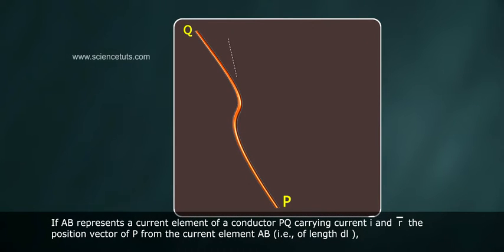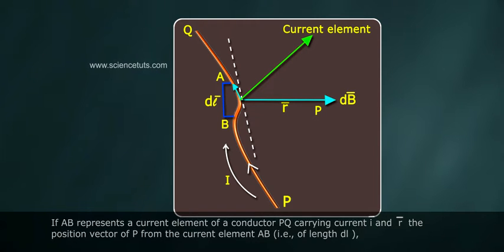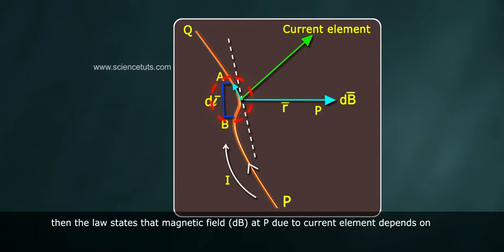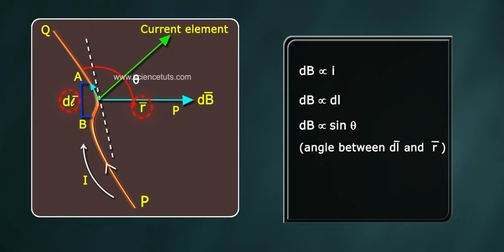If AB represents a current element of a conductor PQ carrying current I, and R-bar the position vector of P from the current element AB that is of length DL-bar, then the law states that magnetic field dB at P due to current element depends on: dB is directly proportional to I, dB is directly proportional to DL, dB is directly proportional to sine theta where theta is the angle between DL-bar and R-bar, and dB is directly proportional to 1 by R-square.